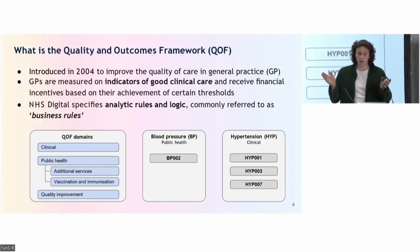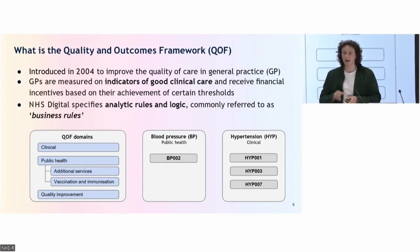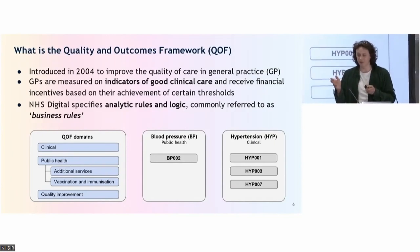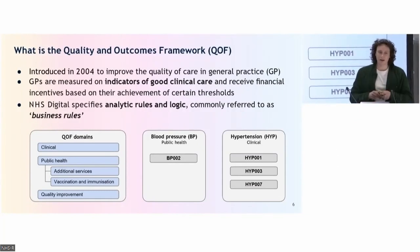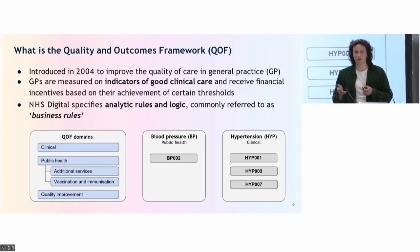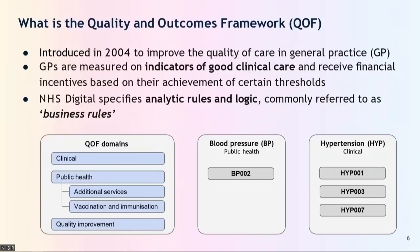The Quality and Outcomes Framework was introduced in 2004 to improve the quality of care in general practice. GPs are measured against indicators of good clinical care and receive financial incentives based on their achievement. These indicators are really well described in Word documents, specified by NHS Digital. They're defined in concepts, but unfortunately we can only access the Word documents — we can't see the codes that represent them. So we thought we could translate these Word documents into reusable code.